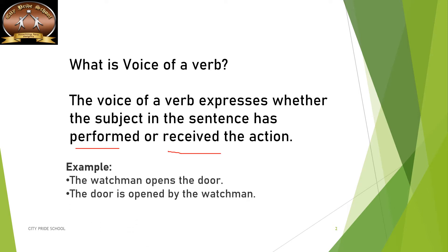Let me give you an example. See the first example: the watchman opens the door. What is the subject here? We are talking about the watchman doing something — he has opened the door. So 'open' becomes the verb, 'watchman' becomes the subject, and he has done the action of opening the door. Here 'door' becomes the object.